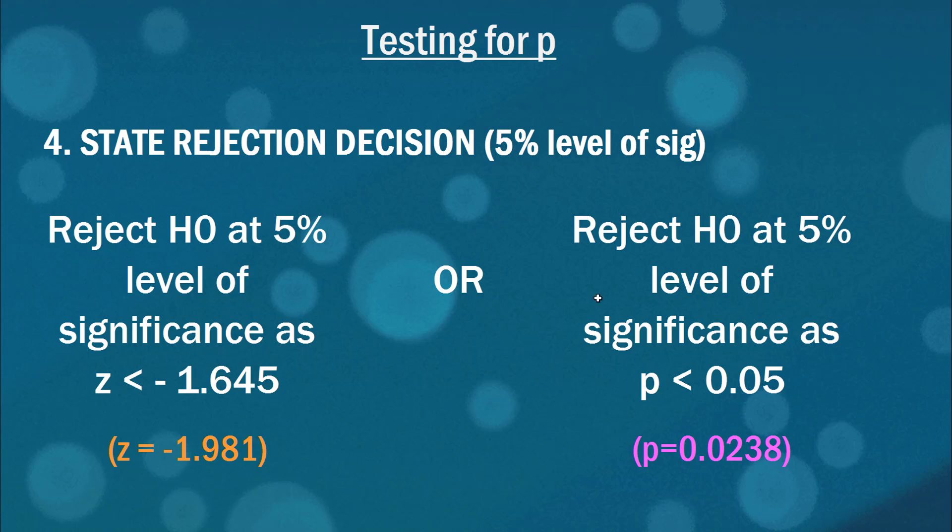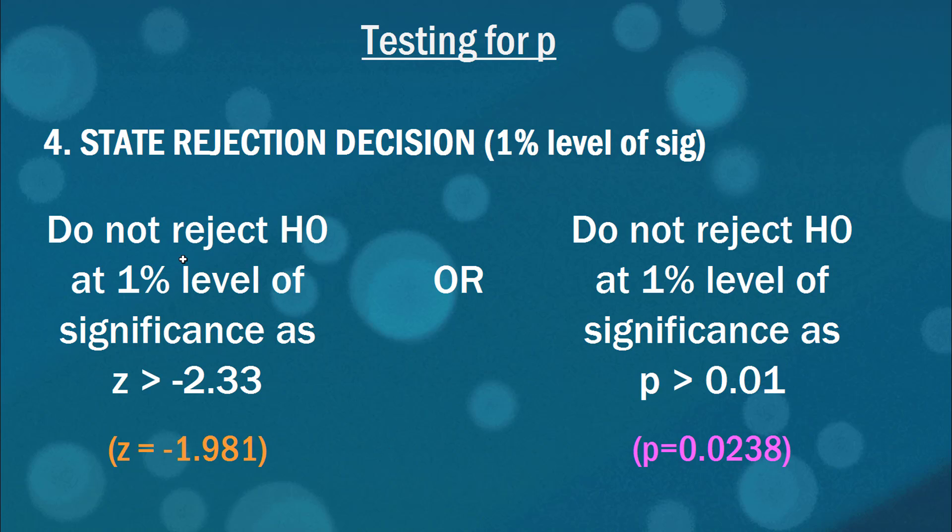So here's our rejection decision for the 5% level of significance. We can either say we reject the null hypothesis as the z-value is less than negative 1.645, or we can say we reject it because the p-value is less than 0.05. Now for a 1% level of significance, we can see that we don't reject the null hypothesis. Using the z-value, you can see that our value was slightly higher than that critical point below which we'd reject. Similarly, the p-value was greater than 0.01. So these will always agree with each other, and in this case, it's no exception.